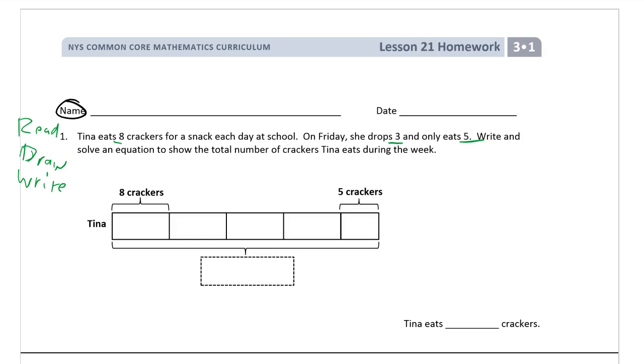You have to read all the words. Tina eats 8 crackers for a snack each day at school. So here we have Tina. 8 crackers for each day. On Friday, so we have one, two, three, four, five days. That's a week. On Friday, this is the last day right here. She drops 3 of the crackers and eats only 5. We start with what we know and what we don't.